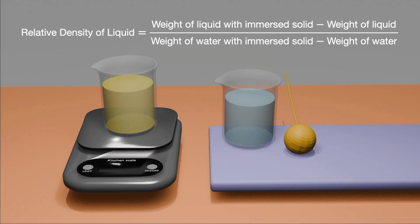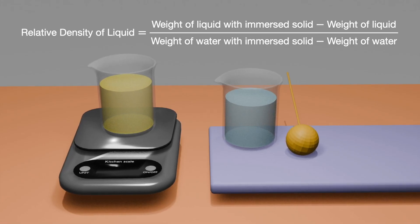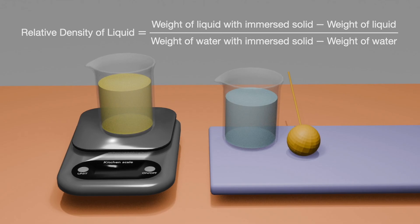Relative density of liquid is weight of liquid with immersed solid minus weight of liquid, divided by weight of water with immersed solid minus weight of water.